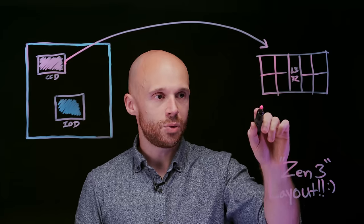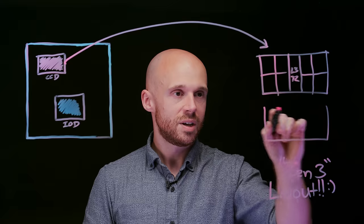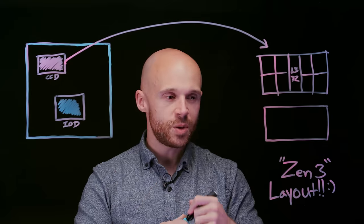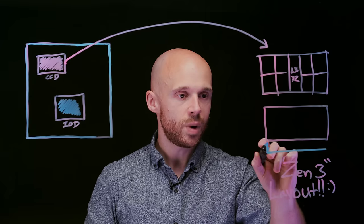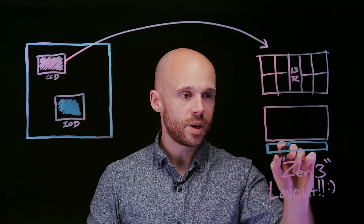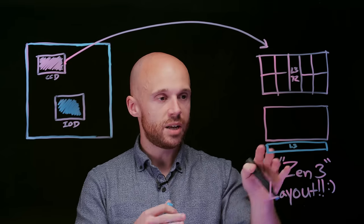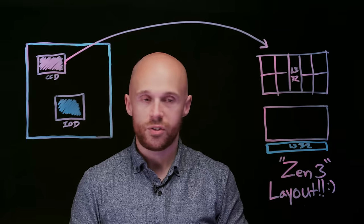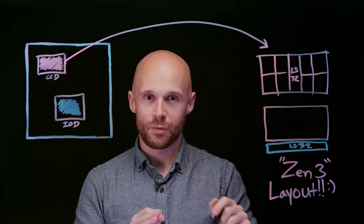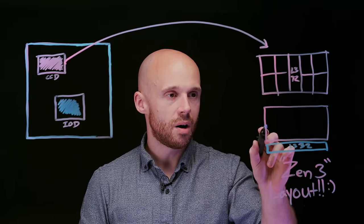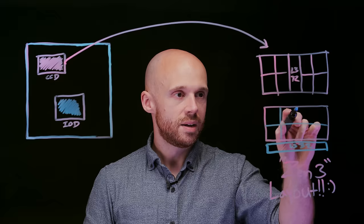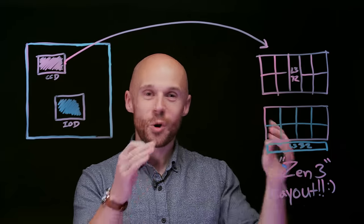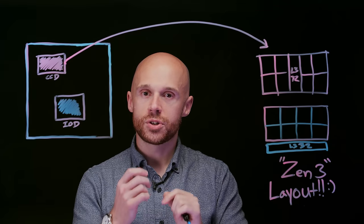So let's put Zen 3 on the board. It looks a little bit different. This isn't exactly how the chip is laid out in real life, but it helps to draw it this way just so you can see what's going on. We've got also 32 megs of L3, just like Zen 2. But here is the big difference - how the cores are laid out. We've got still eight cores, but they're all together. All eight cores are in one single large block.